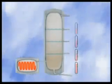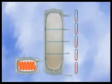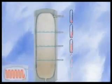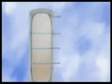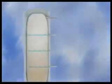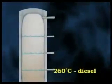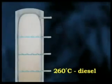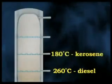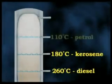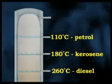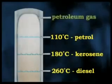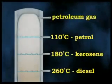The higher the gas rises in the tower, the lower the temperature becomes. The precise details differ at every refinery and depend on the type of crude oil being distilled. But at around 260 degrees, diesel condenses out of the gas. At around 180 degrees, kerosene condenses out. Petrol or gasoline condenses out at around 110 degrees, while petroleum gas is drawn off at the top.